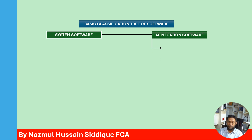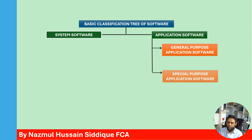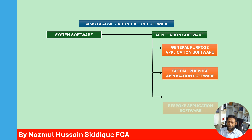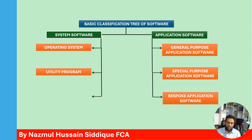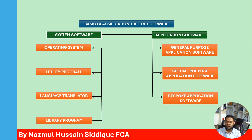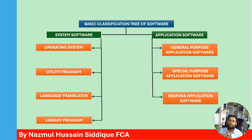Application software is also classified into general purpose application software, special purpose application software, or bespoke application software. On the other hand, system software is classified into operating system, utility program, language translator, and library programs. So system software has four categories and application software has three categories. This is the basic classification tree, though it can be classified in different ways depending on purpose.